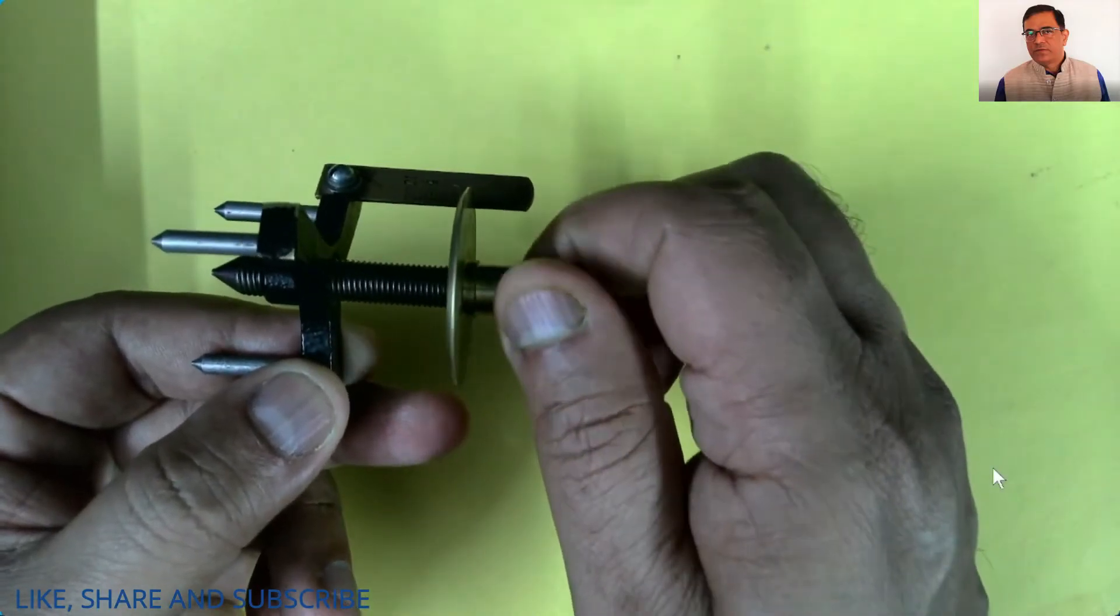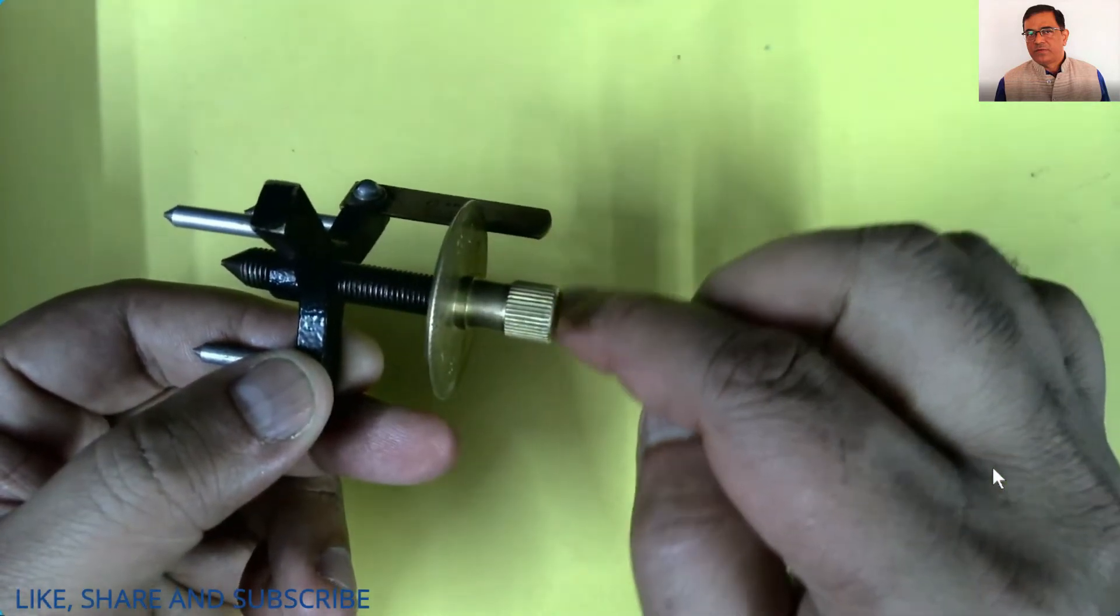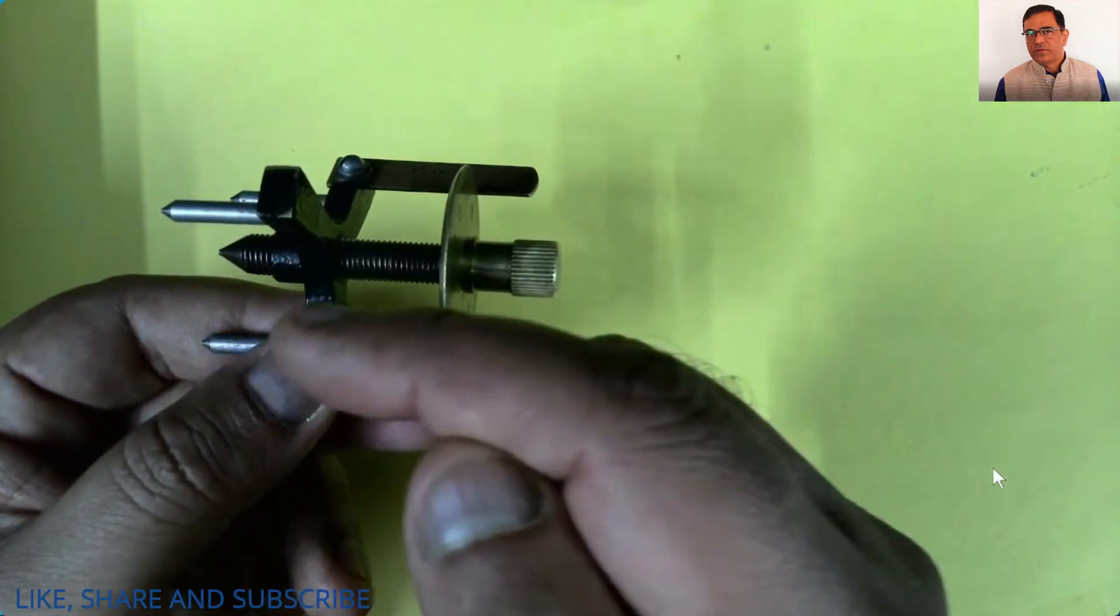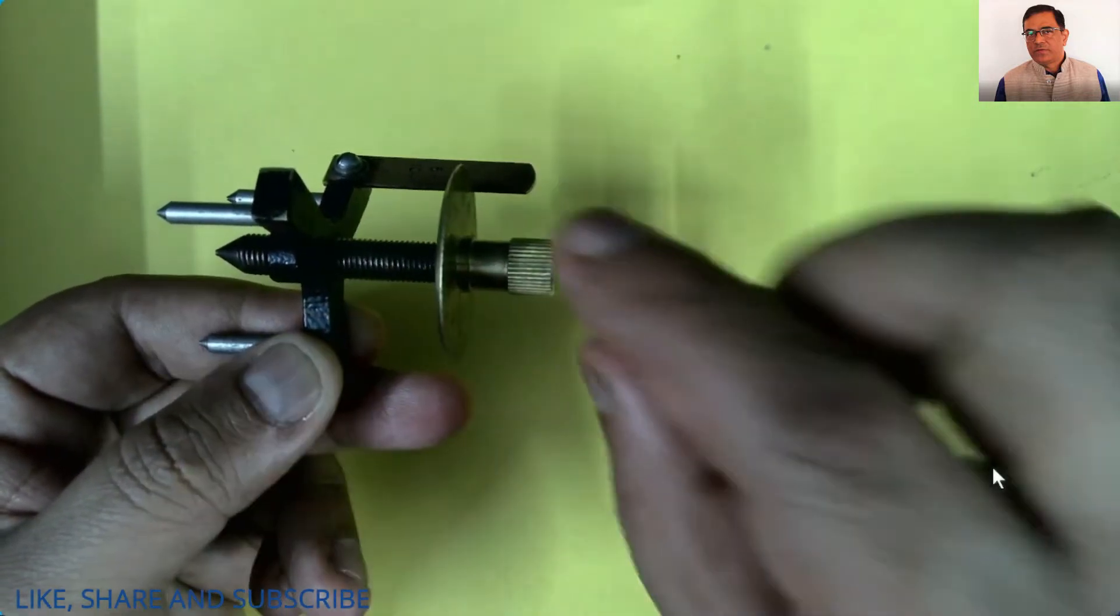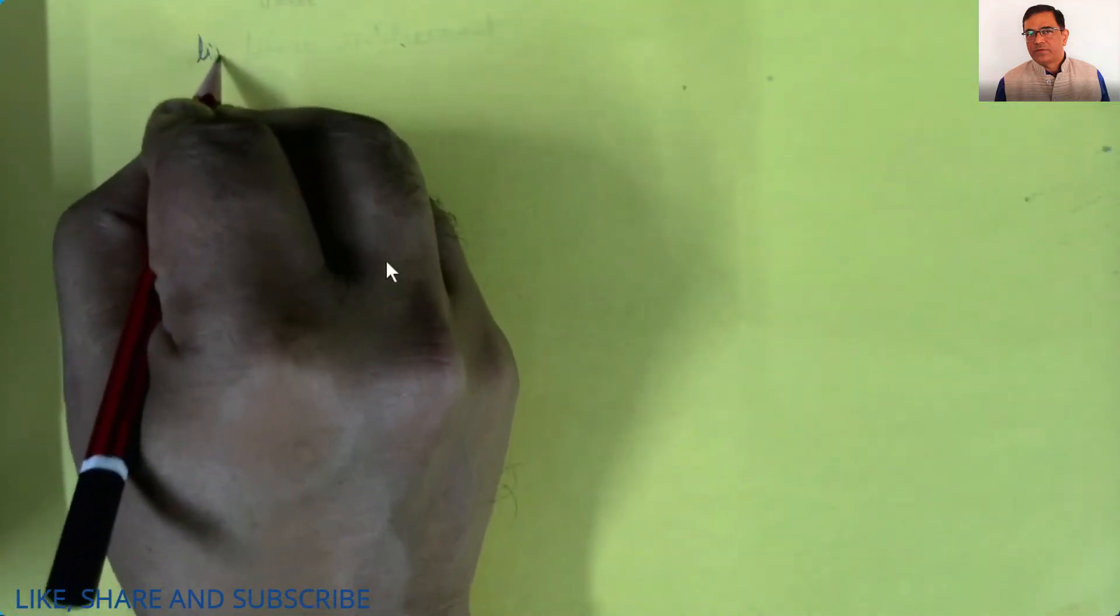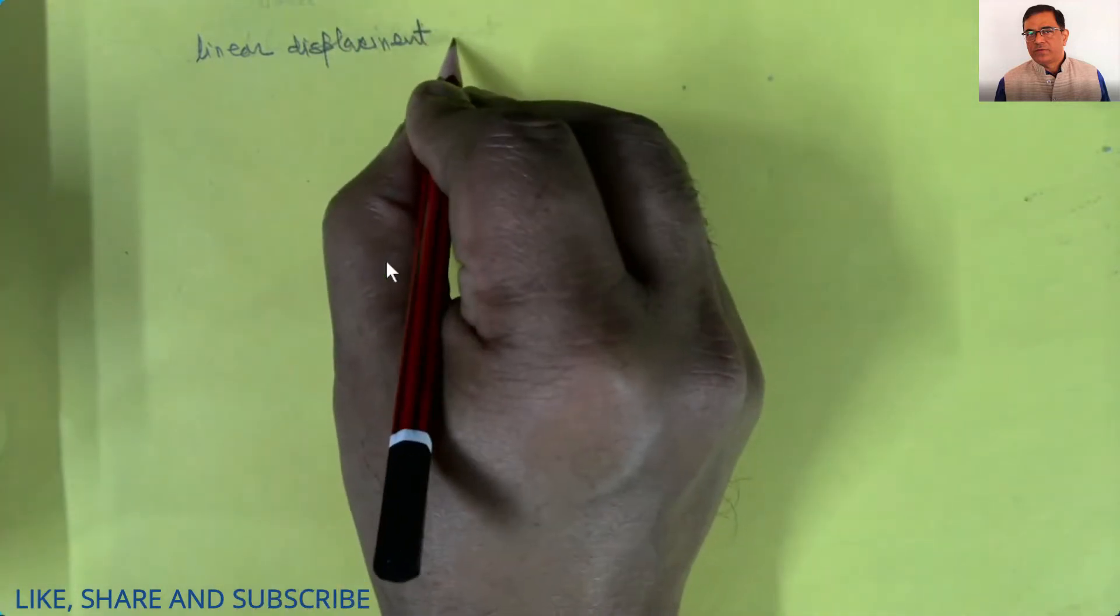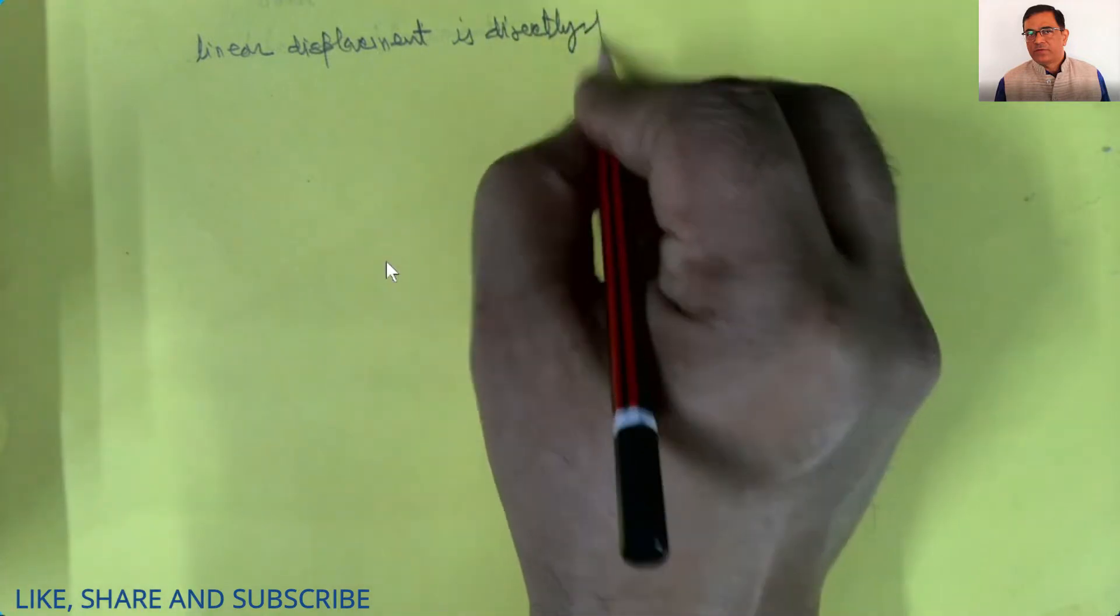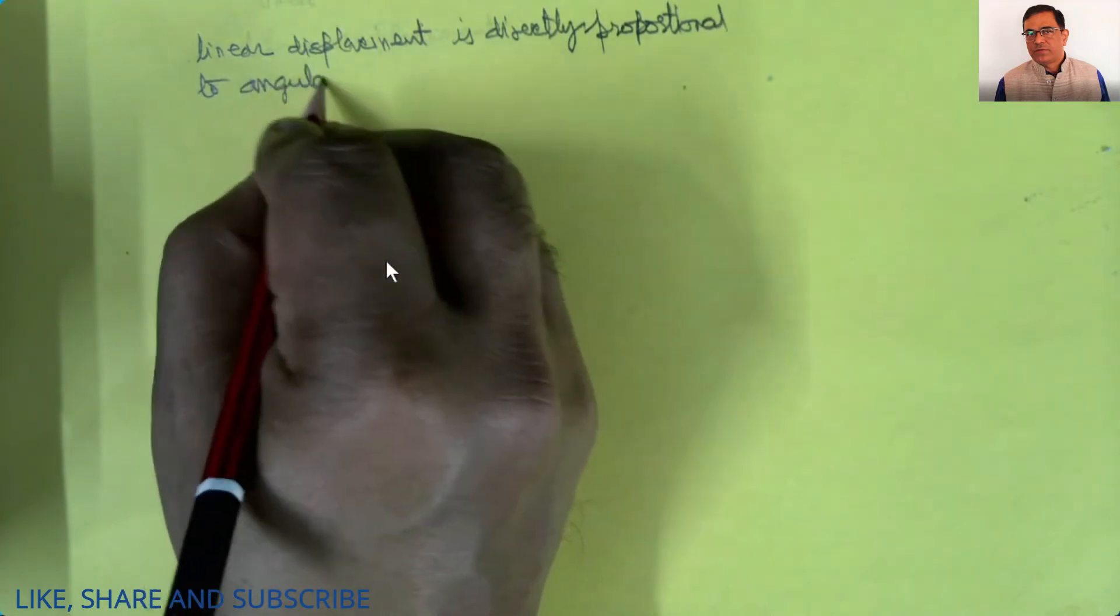When the bolt is rotated, it not only covers angular displacement but also traverses linear displacement. It is observed that the linear displacement covered by the bolt is directly proportional to the angular displacement produced.